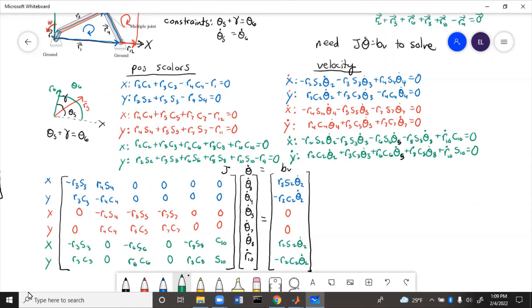So this is how you get the velocity. Take the derivative of the position equations, put them in matrix form, then you can solve them in MATLAB. So let's take a look at what that looks like.